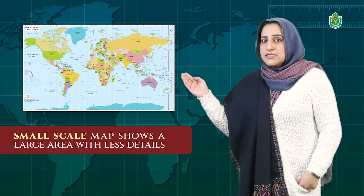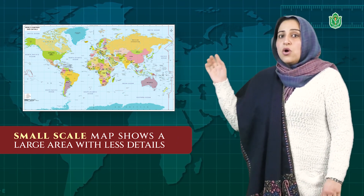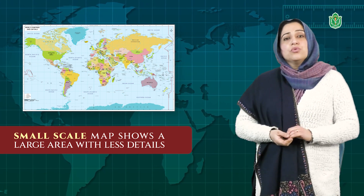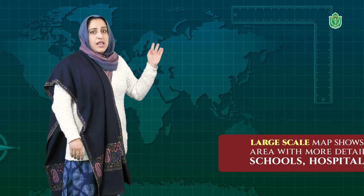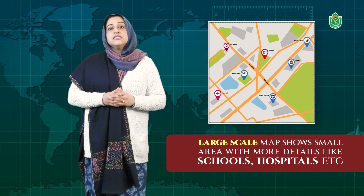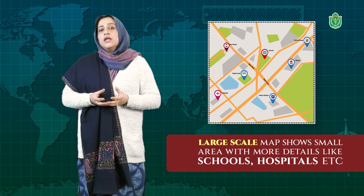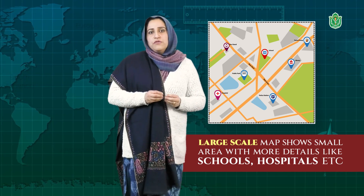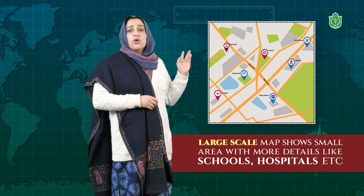Small scale maps show a large area with less detail — like a world map showing the whole world but without road networks or smaller towns. On the other hand, large scale maps show a small area, like your mohalla or district, with minor details such as particular landmarks, schools, and hospitals.